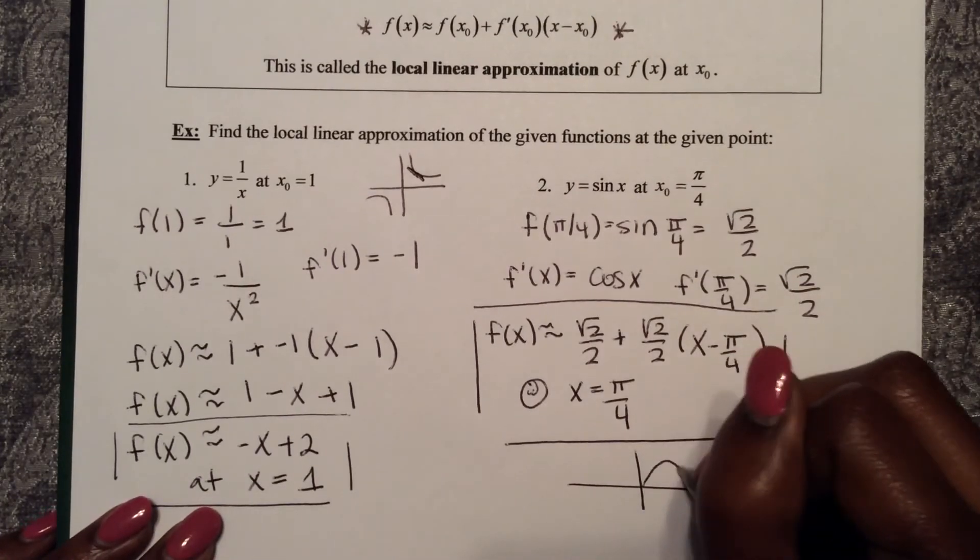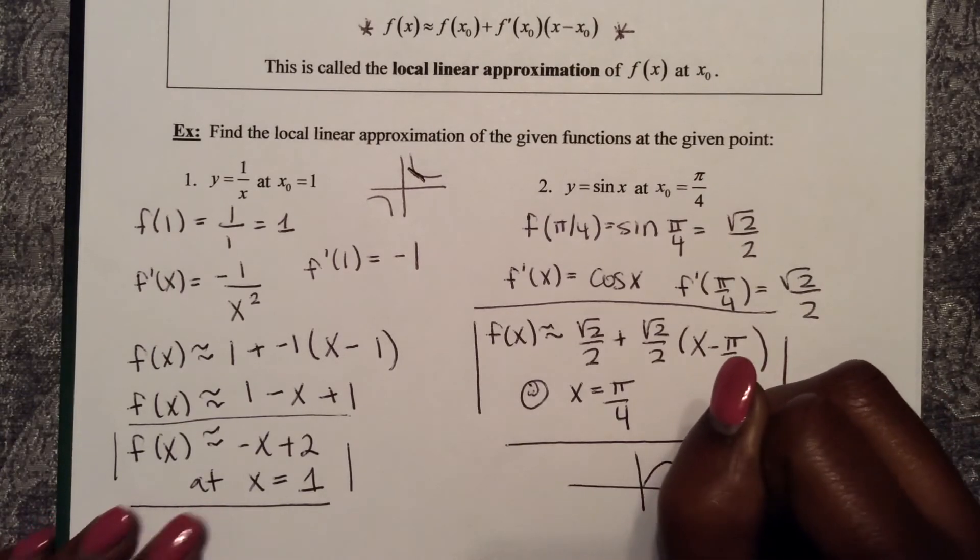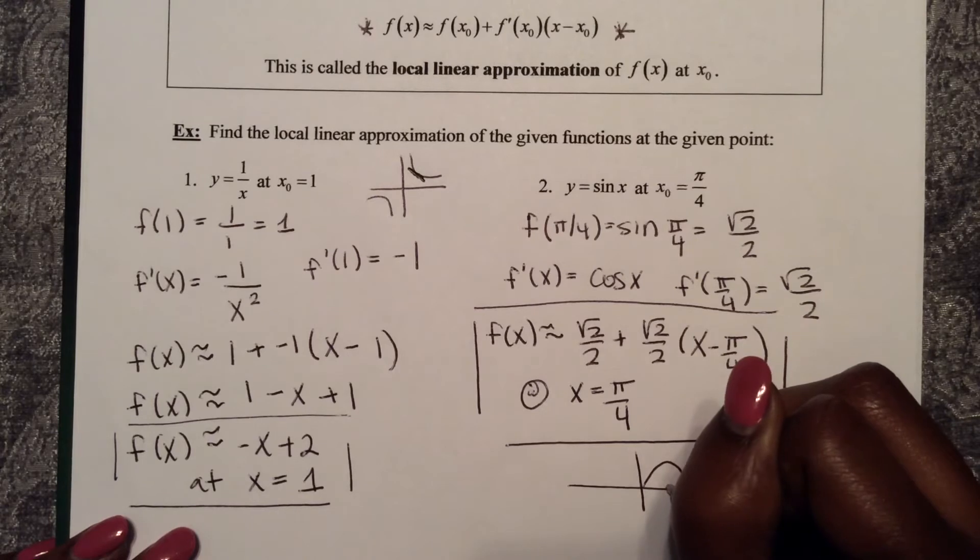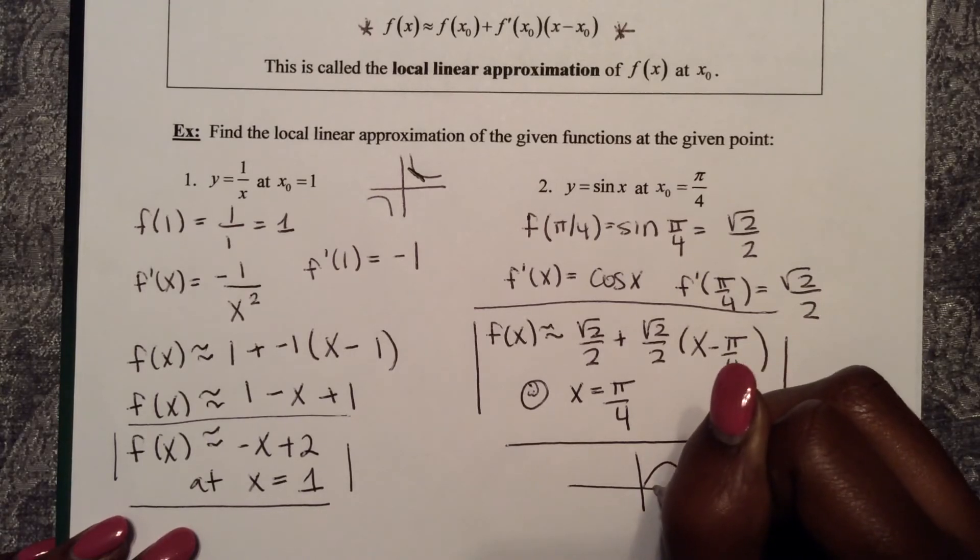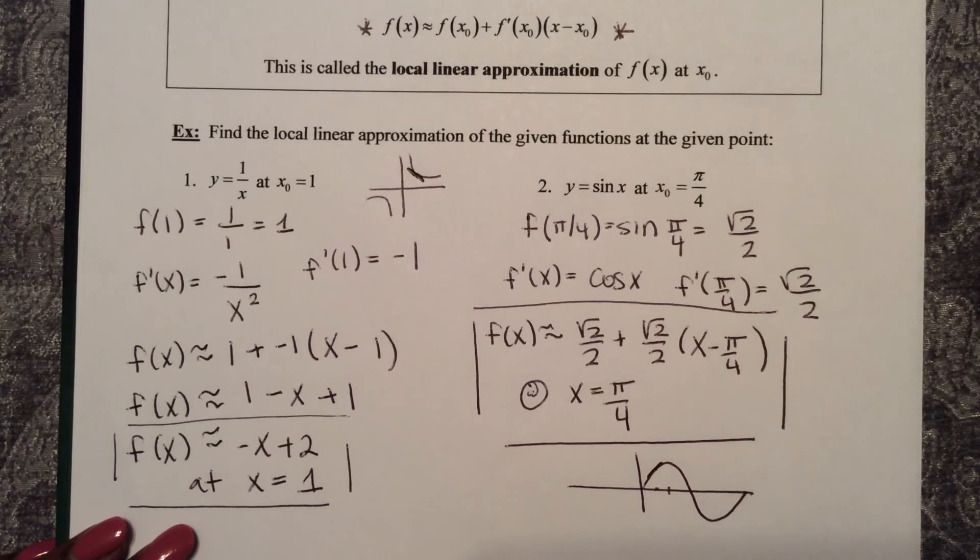Sine looks something like this, right? This is 90, so about pi over 4 is here. So we're looking for that general approximation at that value.